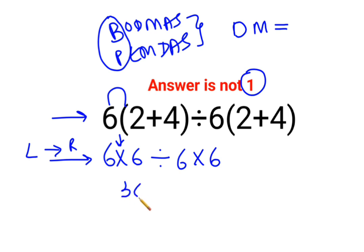So 6 multiplied by 6 is 36 divided by 6 multiplied by 6. Next, the operation which comes first from your left-hand side is division. So 36 divided by 6 is 6 multiplied by 6. The answer for this question is supposed to be 36.